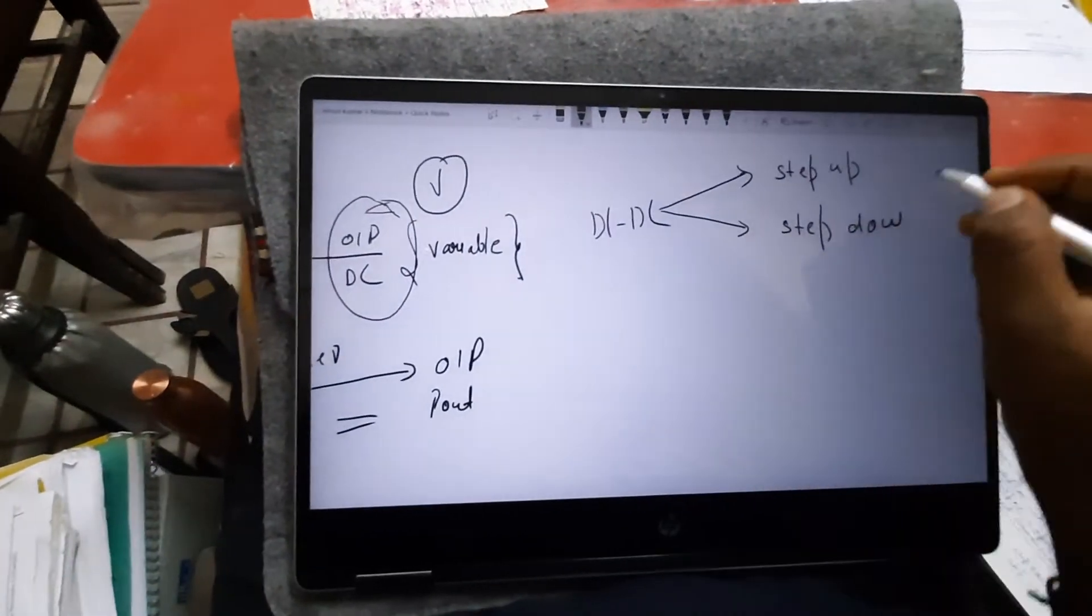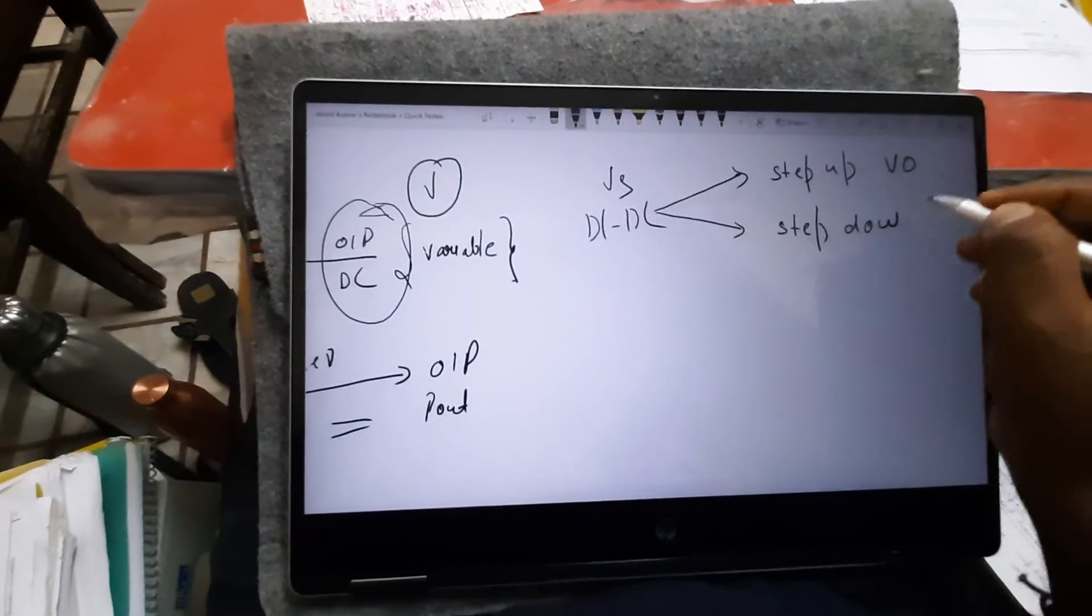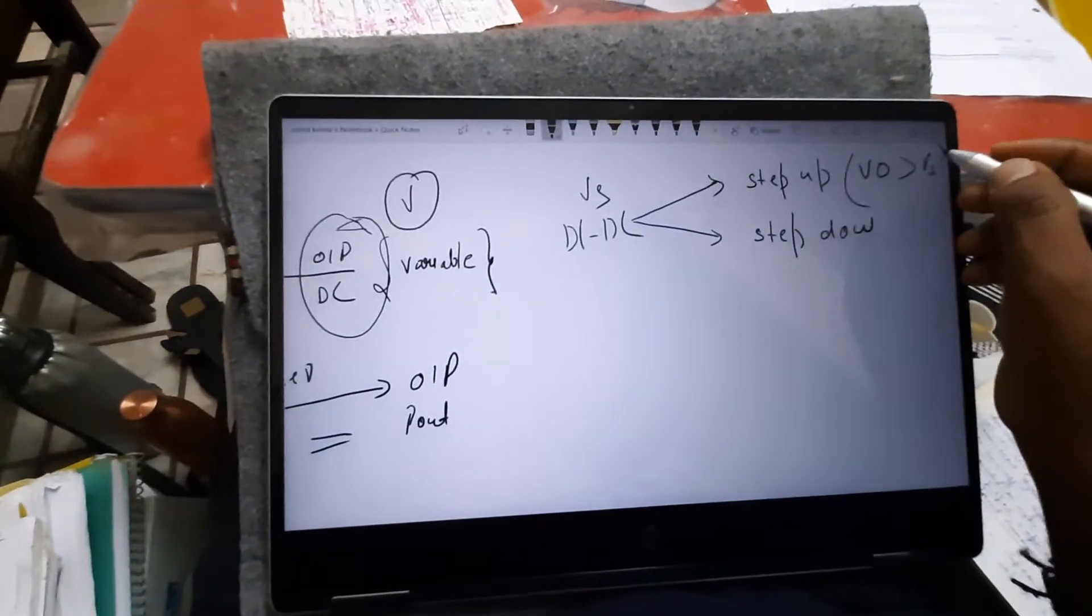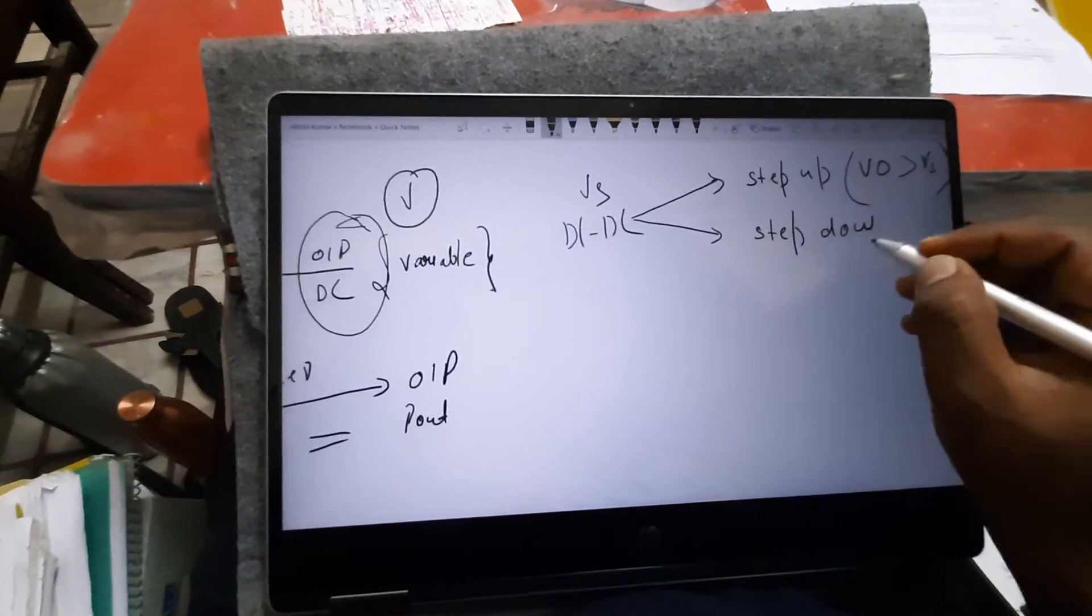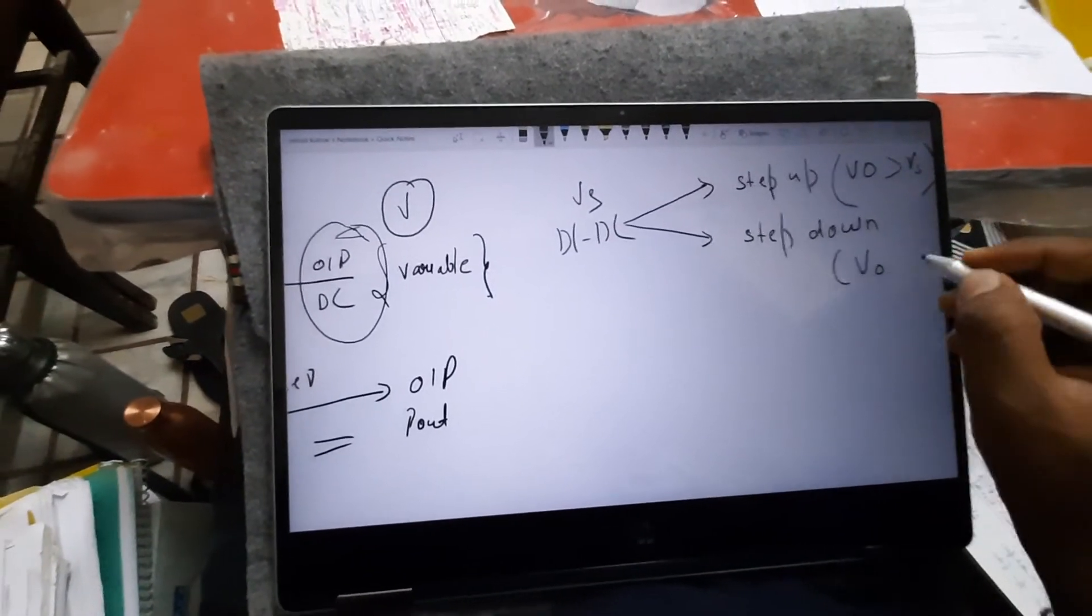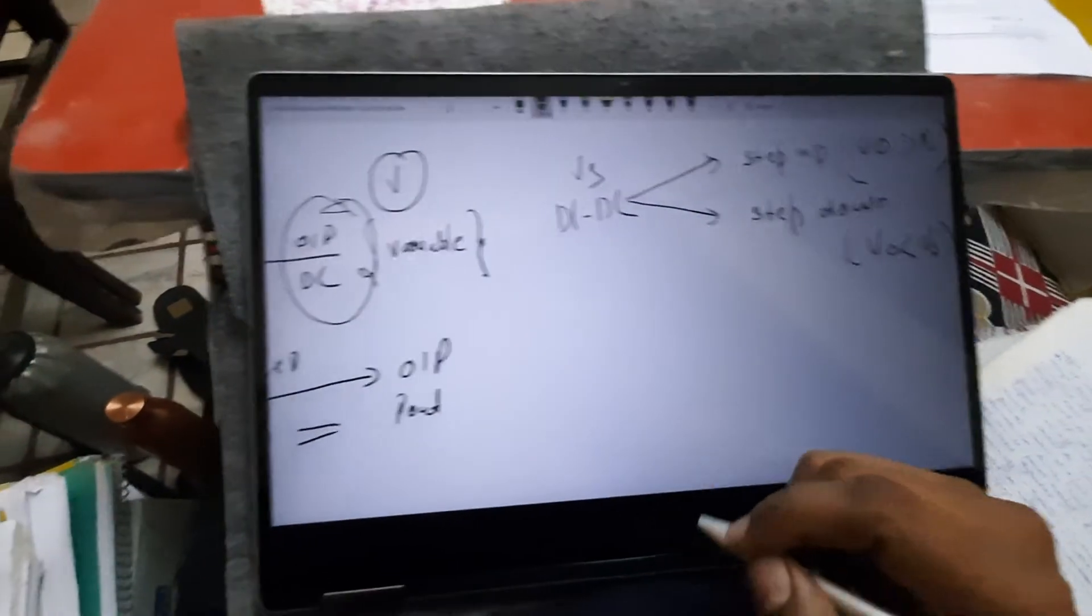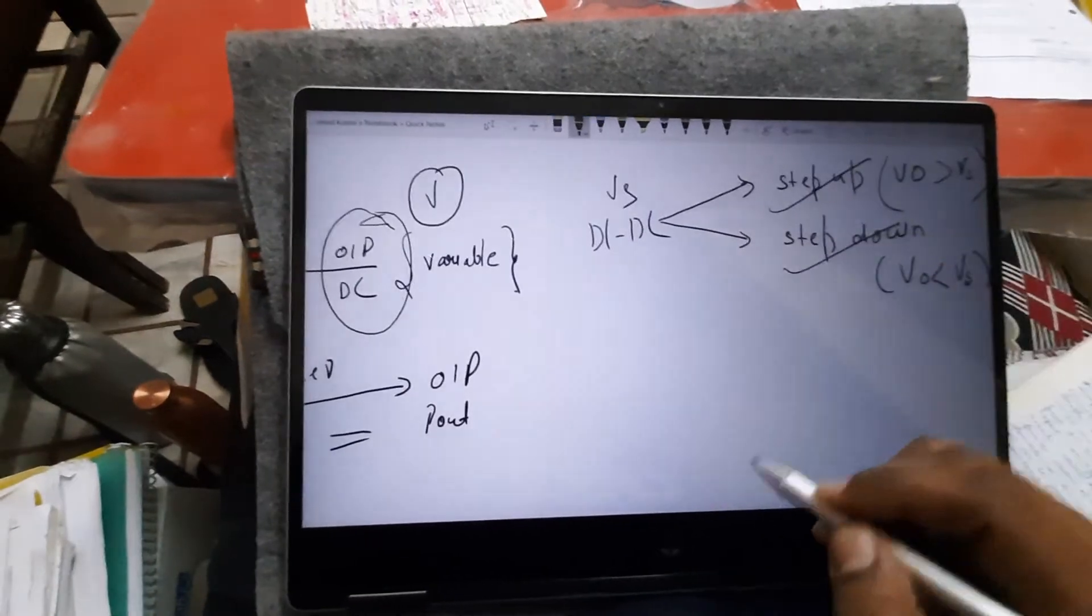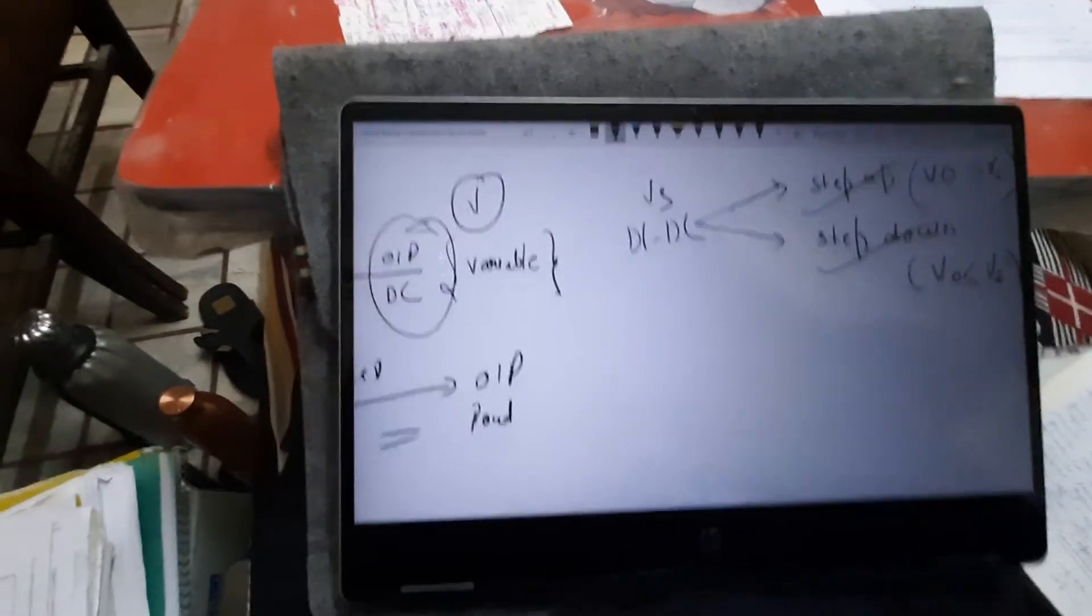Now if suppose V0 is the output and Vs is the input, so for step down this V0 will be greater than the input... sorry, for step up output is greater than input. For step down the average output voltage is less than the input supply. So we will study the step up chopper and step down chopper one by one. Let's begin with the step down chopper.